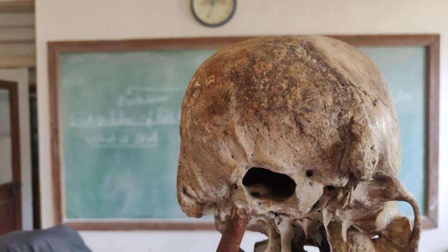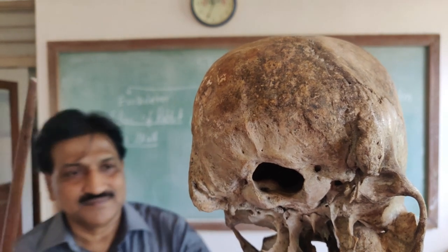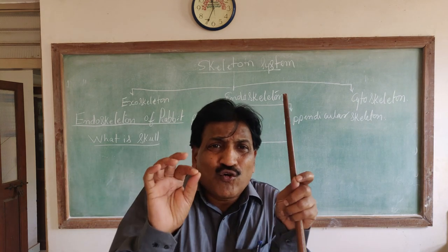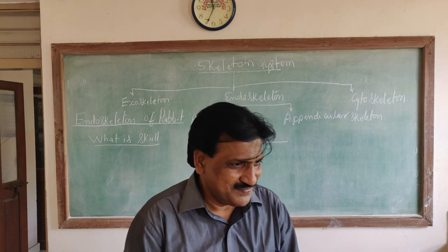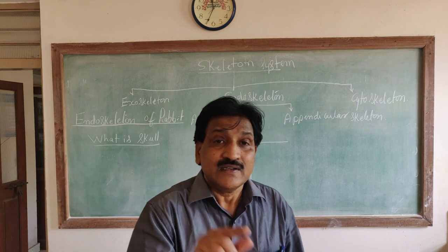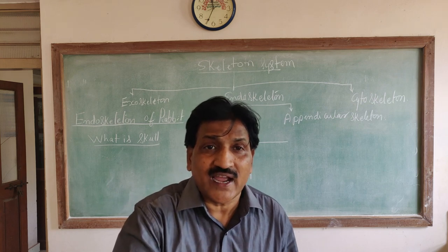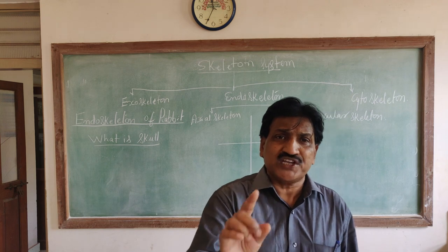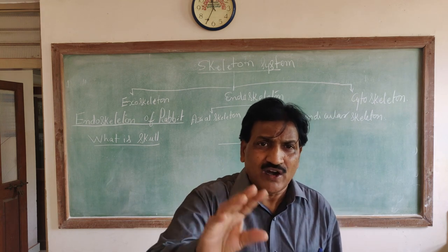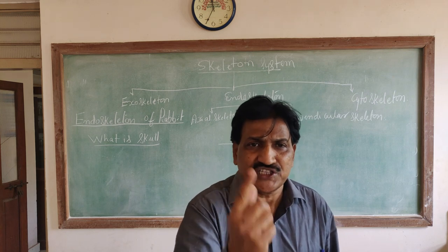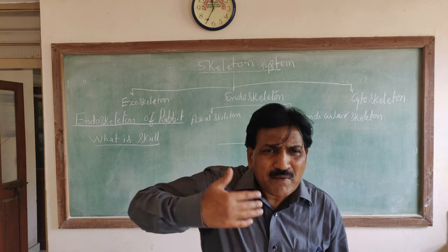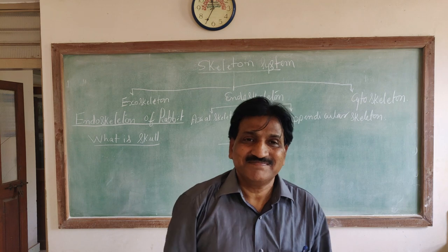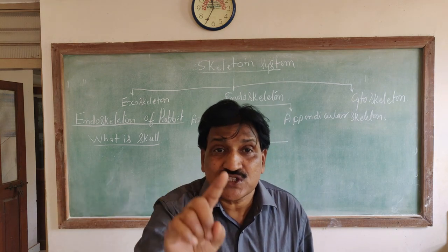On either side of the skull we can find two projections called the occipital condyles. In case of mammals, there are two occipital condyles on either side of the foramen magnum, and such a skull is called dicondylic. What is the difference between monocondylic and dicondylic? If the skull has only one projection at the posterior end, it is called monocondylic — best example is birds. Birds can rotate their head 360 degrees because they have only one condyle.